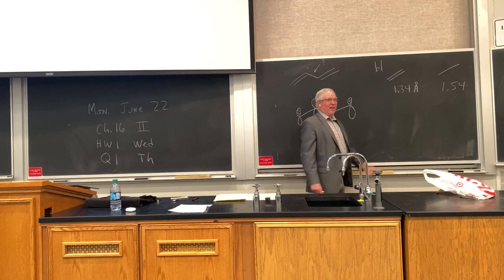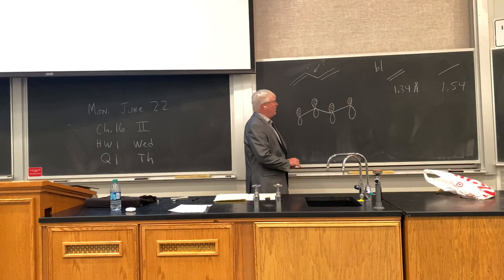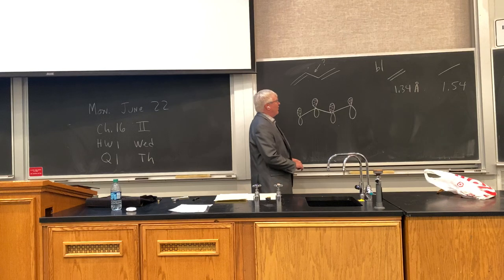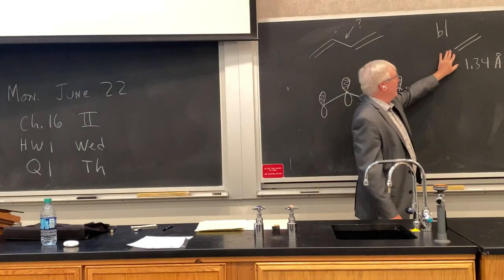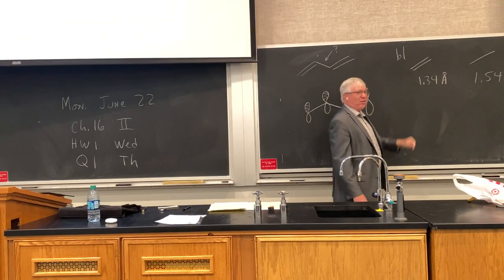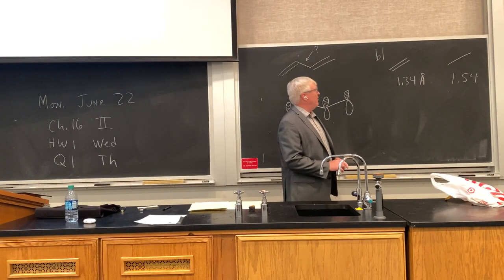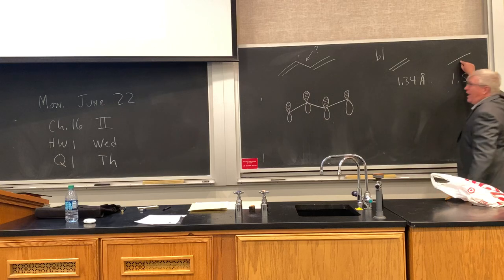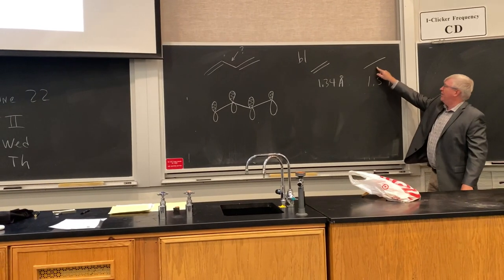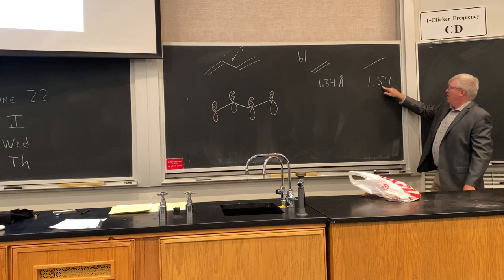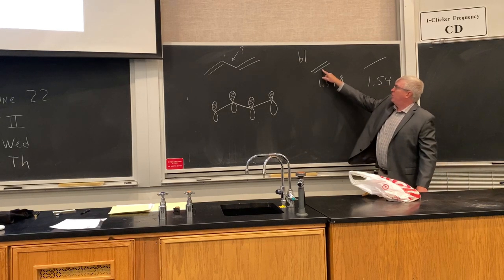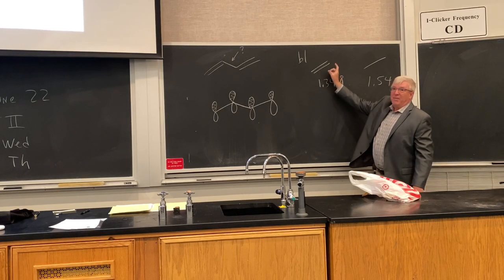Comparing bond lengths — which can be accurately determined using X-ray crystallography — we know the bond length of a typical isolated pi bond, like in ethylene, is 1.34 angstroms. An angstrom is 10 to the minus 10 meters. The typical alkane that's sp3 hybridized, like ethane, has a bond length of 1.54 angstroms — quite a bit longer. The shorter bond is because we have more electrons between the two positively charged carbon nuclei.